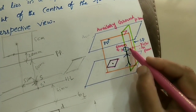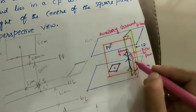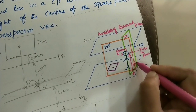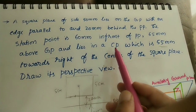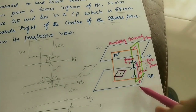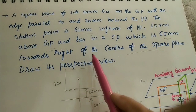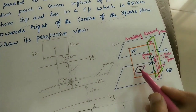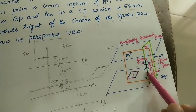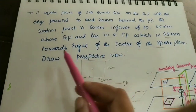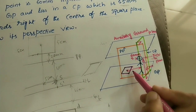For getting the vertical distance, from the GP to the eye it is 65 mm, and the gap from PP to the observer is 60 mm. Also this station point lies in the CP — station point means observer's eye is in the CP only. This station point is 55 mm towards the right of the center of the square plane. So the CP plane will be 55 mm to the right from the center of the square plane.